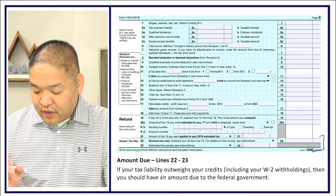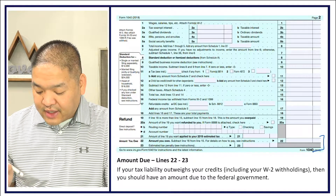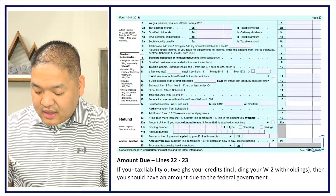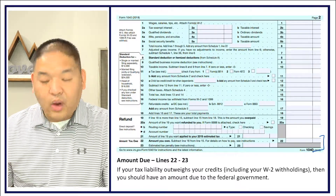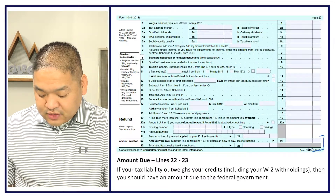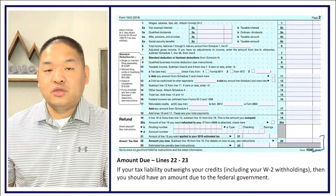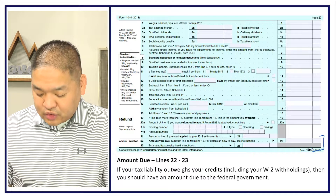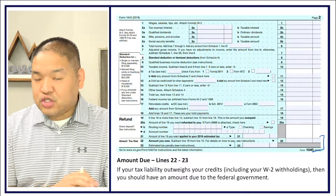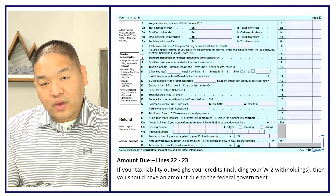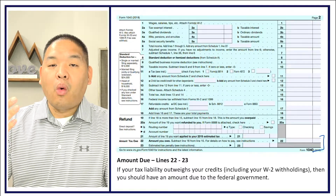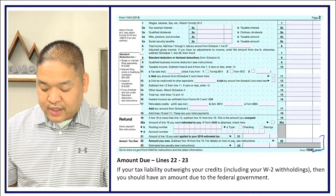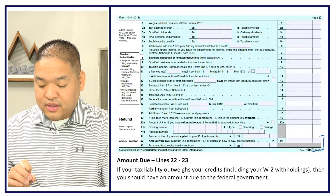An important note: if you have a refund amount on Lines 19, 20a, and 21, you should not have anything on Lines 22 and 23. Conversely, if you have amounts on Lines 22 and 23, you should not have a refund. You either get a refund or you owe — it's one or the other.